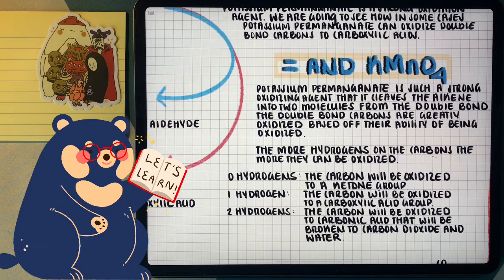And if it has two hydrogens, meaning that the double bond was terminal, that means that we're going to form a carbonic acid. Carbonic acid decomposes into carbon dioxide and water. So one way we can think about it is that if it has two hydrogens, it's going to break down to carbon dioxide.